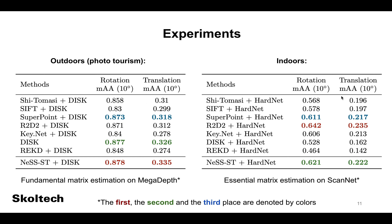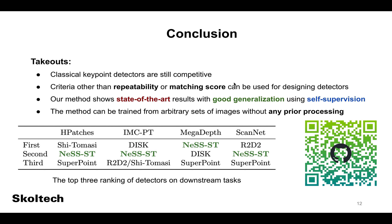We perform exhaustive evaluation on downstream tasks, including fundamental and essential matrix estimation. Our method shows state-of-the-art results, scoring first on the MegaDepth dataset and taking second place on ScanNet. To conclude, our research indicates that classical keypoint detectors are still competitive and thus can be used as a source of ground truth for learned detectors.